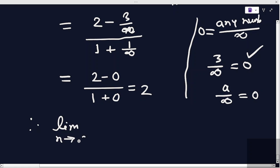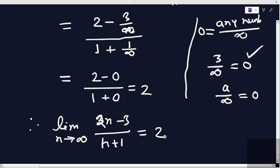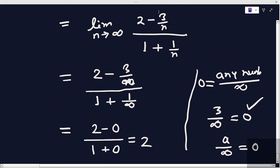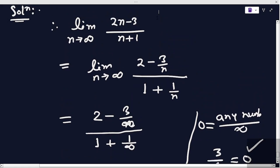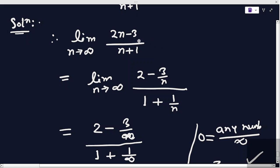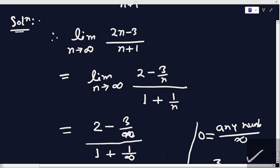Hence the limit as n tends to infinity of twice n minus 3 divided by n plus 1 is equal to 2. So we have found the limit.